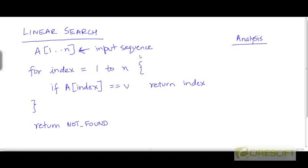Assume that the input sequence is given to you in an array a with indices 1 to n. All we need to do in linear search is to scan this array linearly from indices 1 to n, and in each step check whether a of index — the current element we are examining — is equal to v or not.